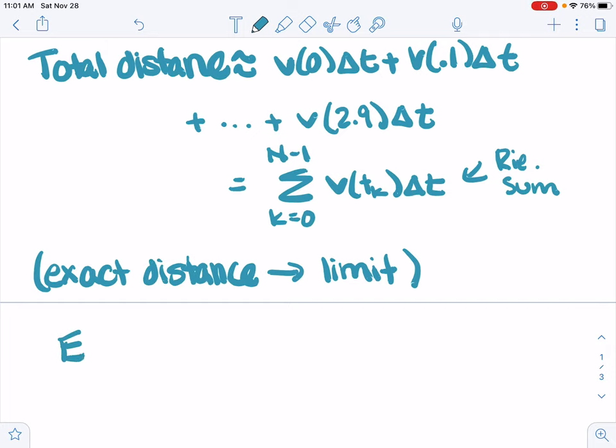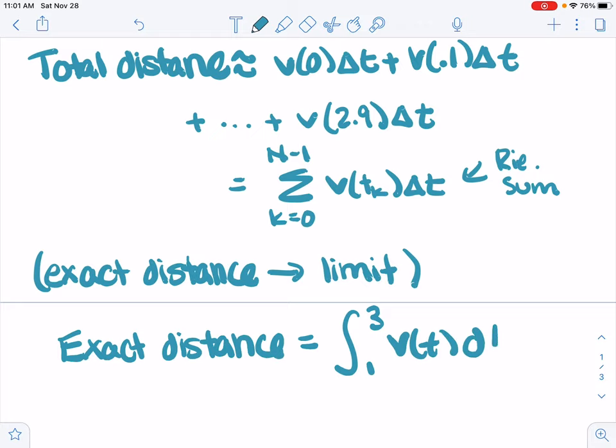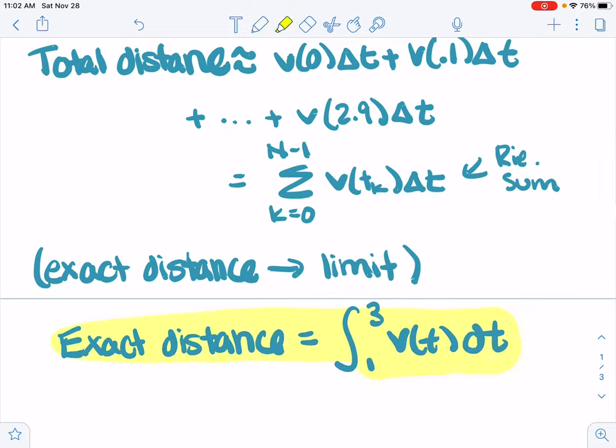So the exact distance, as we take the limit of the Riemann sum, is the definite integral. So we get the exact distance through this definite integral. It's this process of approximating it using chunks and then taking a limit as the time interval gets smaller and smaller. It gives us the exact value as a definite integral.